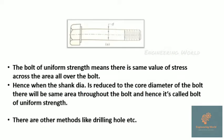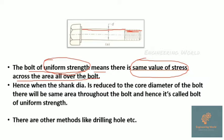Here, shank diameter and thread diameters are equal. Bolt of uniform strength means there is the same value of stress across the area all over the bolt. When shank diameter is reduced to the core diameter of the bolt, they have the same area throughout, hence it is called bolt of uniform strength. There is another method by drilling a hole, which I will explain in the machine design 2021 GATE lecture.